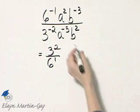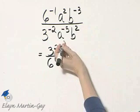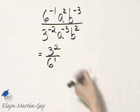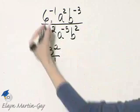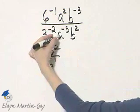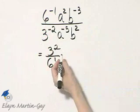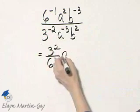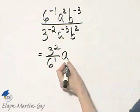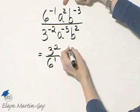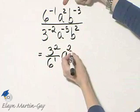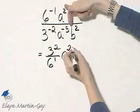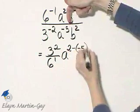And now let's work with our variables. You can do the same thing with your variables if you'd like, but I'm going to use the quotient rule. I've got an a squared in the numerator and an a to the negative 5 in the denominator. So this will be that like base a raised to a power of numerator exponent minus denominator exponent.